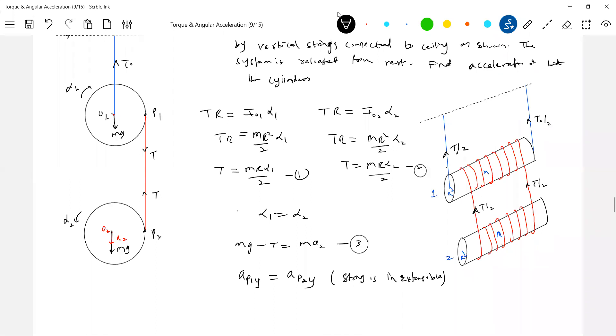Acceleration of point P1 along the y-axis should be equal to acceleration of point P2 along the y-axis. Any reason? String is inextensible. What is the acceleration of point P1? Tangential acceleration r·α1. And what is the acceleration of point P2? a2 minus r·α2. Since α1 equals α2, let it be equal to α. Therefore, this will be r·α1 plus α2 is equal to a2.